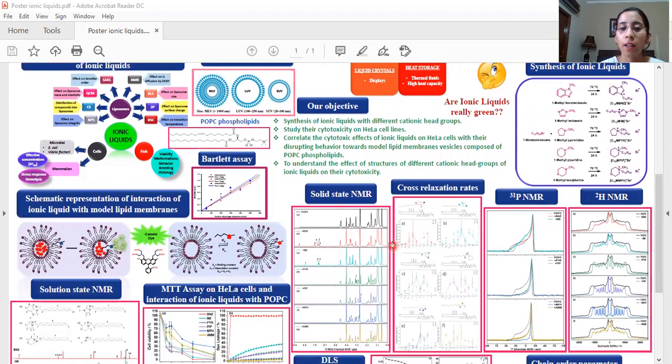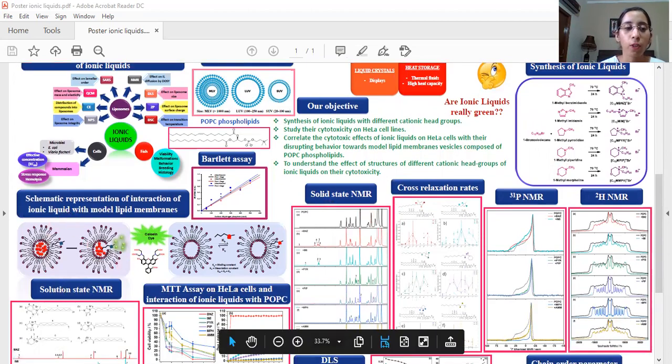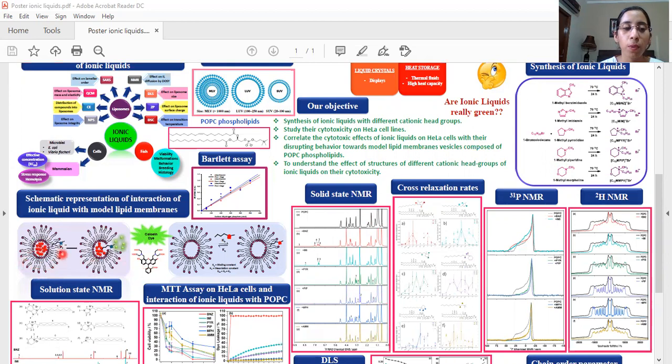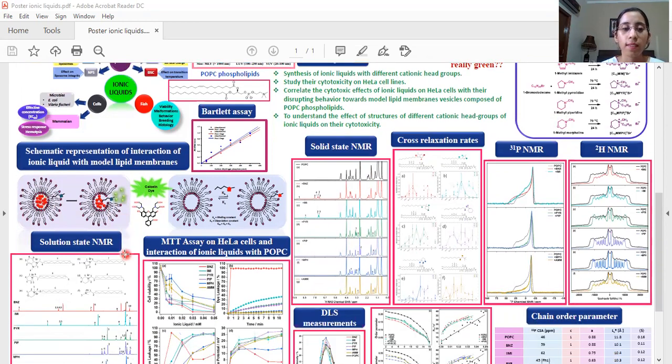This is a schematic representation in which the calcein dye is encapsulated within the POPC vesicles and the ionic liquid when it penetrates into these vesicles the dye is leaked out which leads to the enhanced fluorescence and also the binding can be determined using the zeta potential measurements or the ITC measurements.